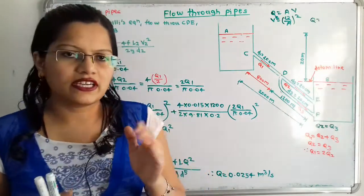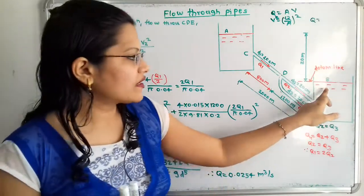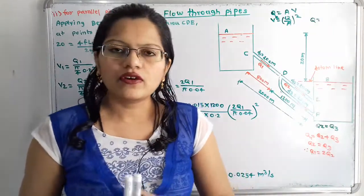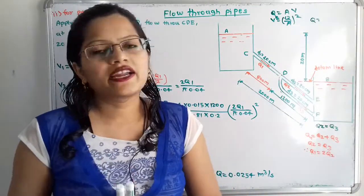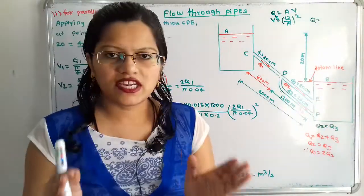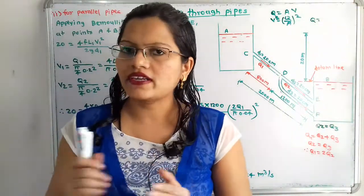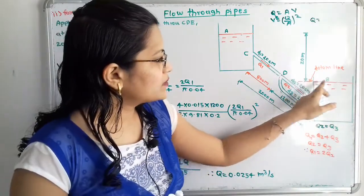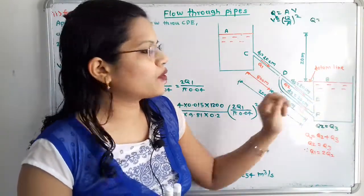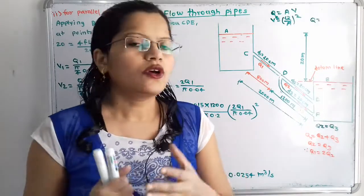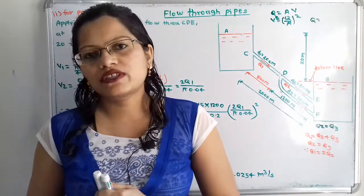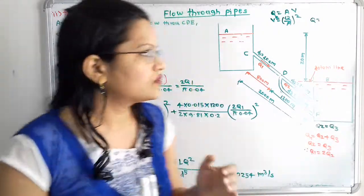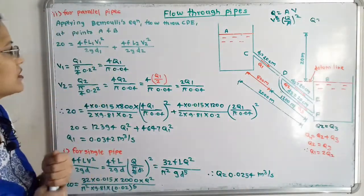On the right-hand side at point B: pressure head = 0, kinetic head = 0 (water is stationary), datum head = 0 (datum line passes through B). So we have: 20 = 0 + 0 + 0 + losses. We must now account for the losses along the pipe path CDE.